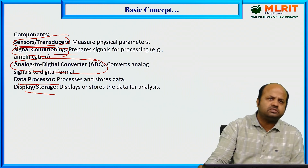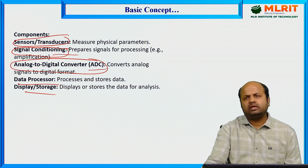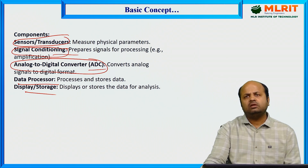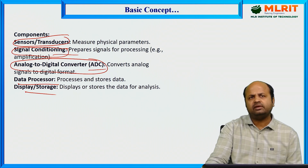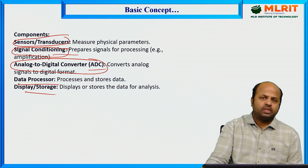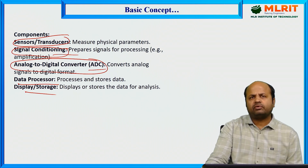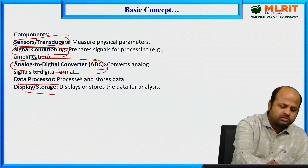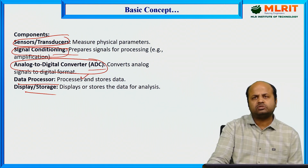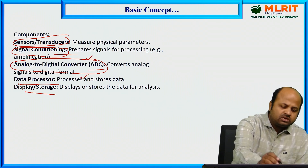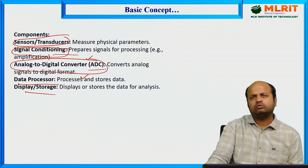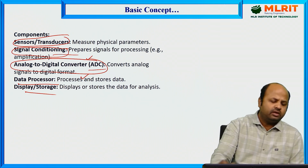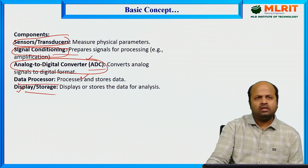Once signal conditioning is done, the signal is given to an ADC — analog to digital converter. This analog to digital converter converts the signal into digital format. Once converted to digital format, we give it to the processor for further processing, because a microprocessor only understands digital data. Finally, either we can display the data or store the data.